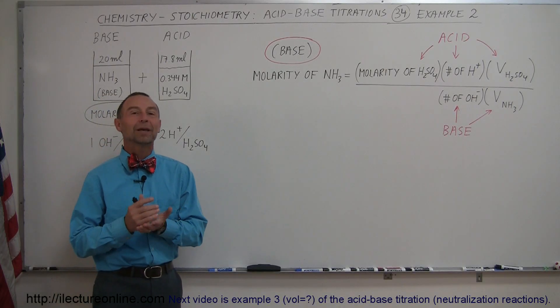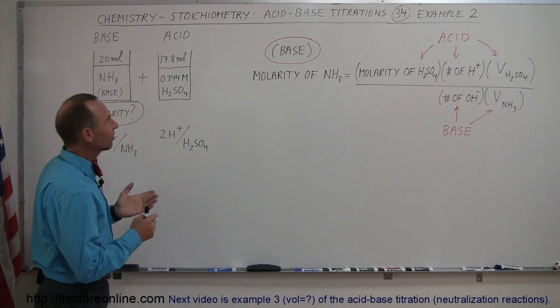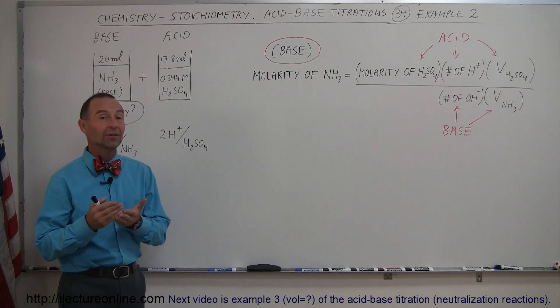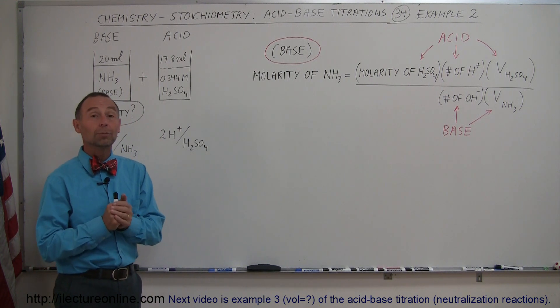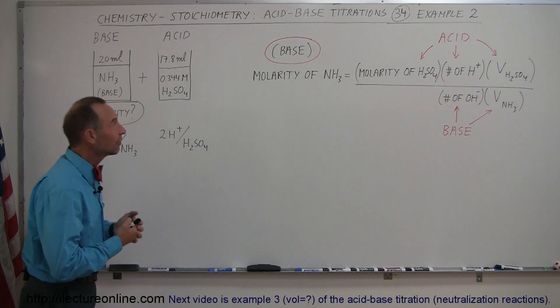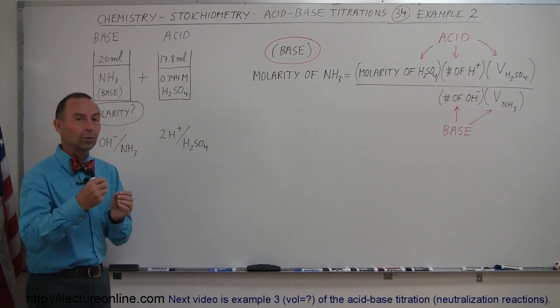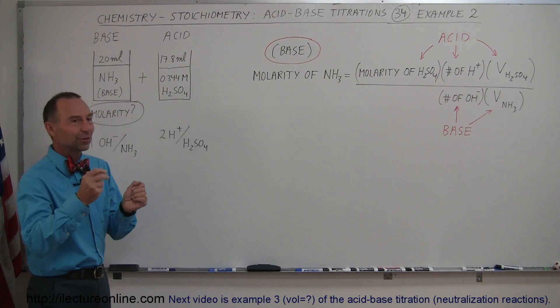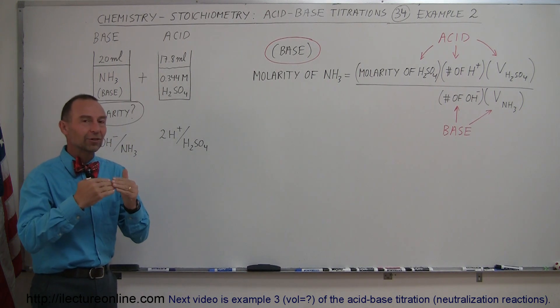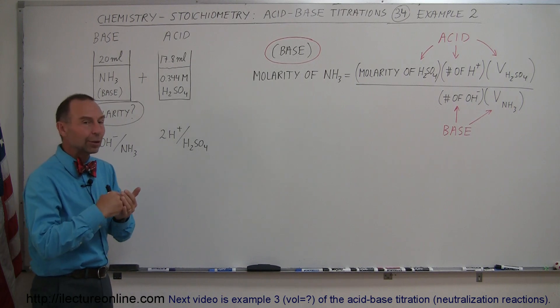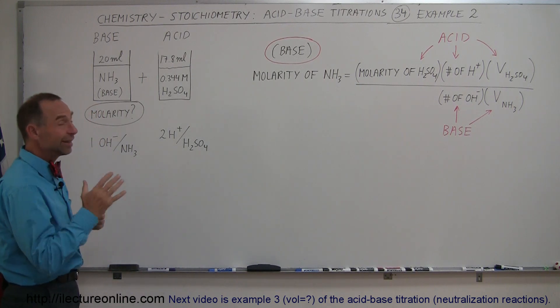Here we're going to do another example of an acid-base titration. Remember, an acid-base titration is simply a means by which you take an unknown acid or base—when we say unknown, we mean an unknown molarity, unknown concentration of acid and base—and neutralize it with a known acid or base, of course, the opposite of what you had to begin with. And so once you neutralize it, you can then figure out the molarity or the concentration of the unknown.